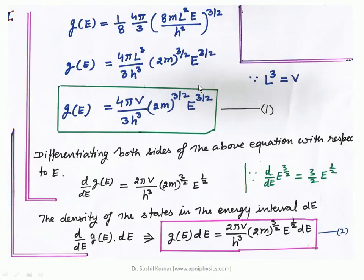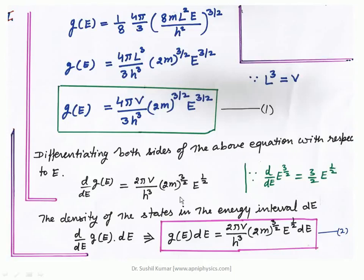The first octant, where all points have positive values, is used, and the radius of that sphere N is determined using the energy formula. When you put all these values you get the quantum state in terms of V, m, and E. Now we differentiate both sides of the above equation, because we know that energy is in continuous form. Differentiation provides: dG/dE = (2πV / h³) × (2m)^(3/2) × E^(1/2), because differentiation of E^(3/2) gives (3/2)E^(1/2).